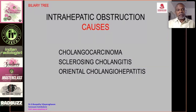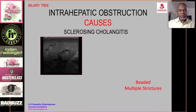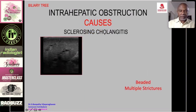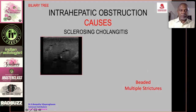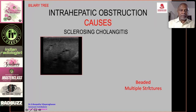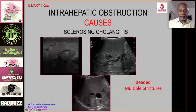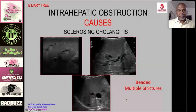Causes in the intrahepatic portion of the bile duct include cholangiocarcinoma, sclerosing cholangitis, and oriental cholangiohepatitis. Sclerosing cholangitis is a rare autoimmune disease causing multiple constrictions of the bile ducts both intrahepatic and extrahepatic. The dilated bile duct appears as a beaded structure, with multiple areas of beading and strictures in the common duct — typical appearance of sclerosing cholangitis.